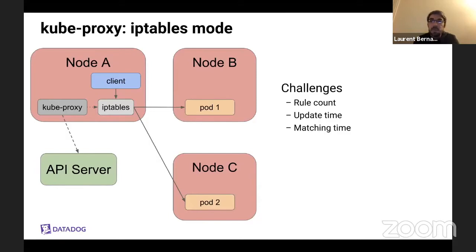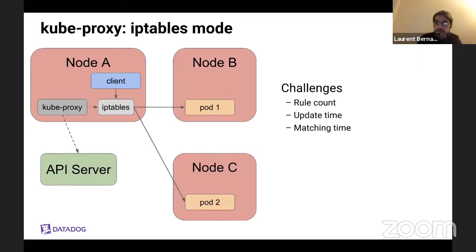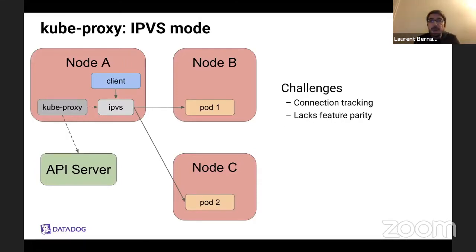iptables works for load balancing, however, when you scale and have a large number of services and endpoints, this becomes challenging — updating the rules can take seconds or more, and even on the data path, going through all the rules to match the one you're interested in can take some time. iptables comes with the kernel and can be used for load balancing, but it was not designed for it. Luckily, the kernel also has a native load balancing solution called IPVS, and people realized that using IPVS as a kube-proxy replacement was a good idea. There was an implementation, it's very powerful, and we've been using that from the start.